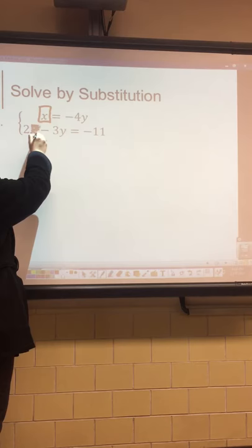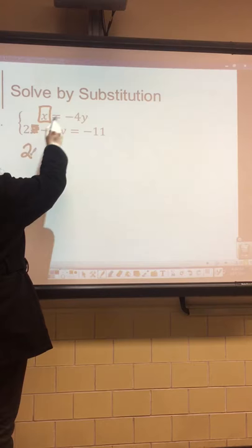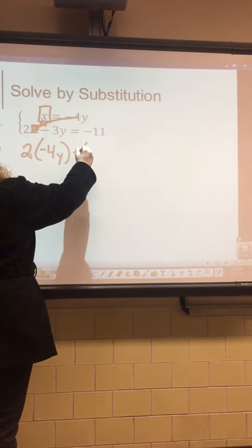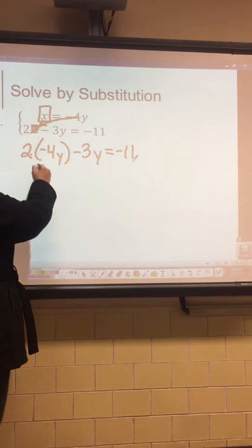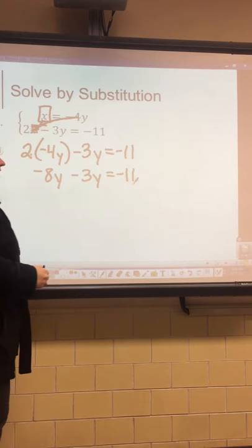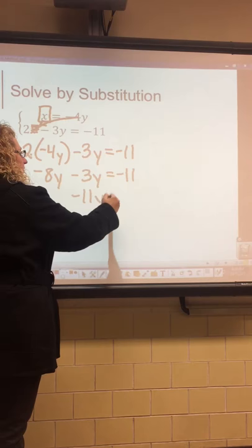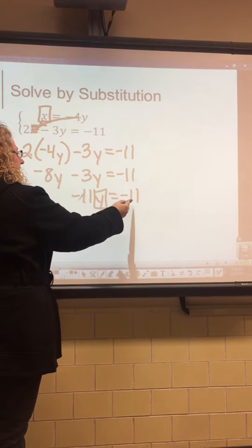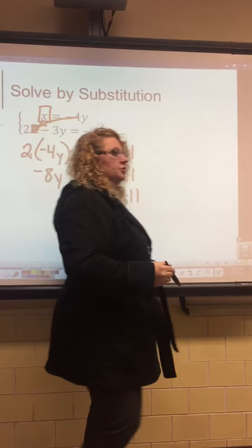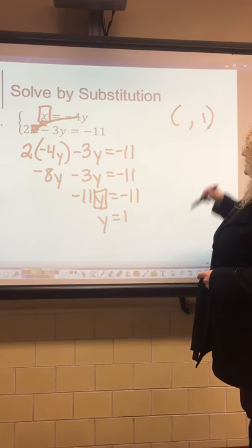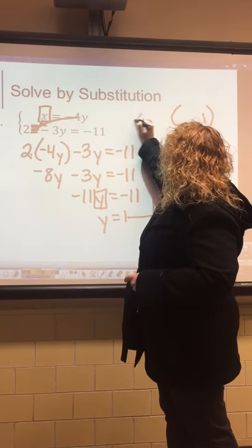For example two, x is the isolated variable. We mark out x in the other equation and rewrite it as 2 times negative 4y — plugging in what x equals — minus 3y equals negative 11. Multiply to get negative 8y minus 3y equals negative 11. These are like terms, so add: negative 8 plus negative 3 gives negative 11y. Divide by negative 11 to get y equals positive 1.